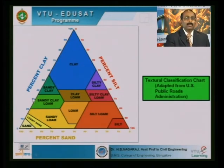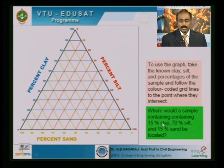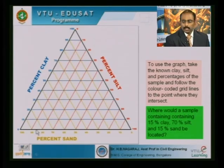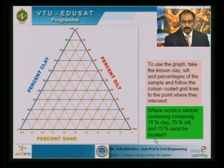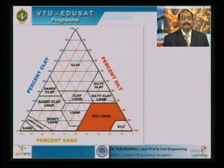For example, a soil with 15% clay, 70% silt, and 15% sand is plotted on the triangular chart: starting at 15% on the clay axis, 70% on the silt axis, and 15% on the sand axis — this combination falls in the silty loam zone. Another example: a soil with 30% sand, 20% silt, and 50% clay plots at point P, which falls in the clay zone. This is how soils are classified using this triangular system.